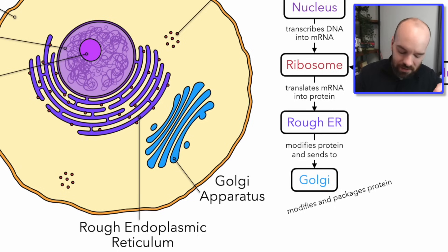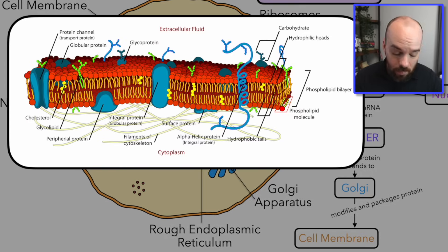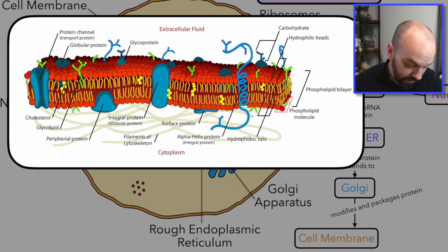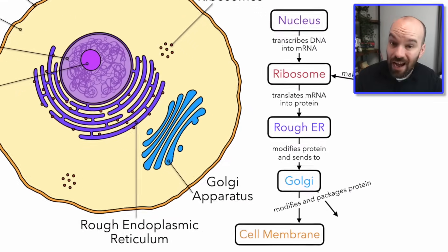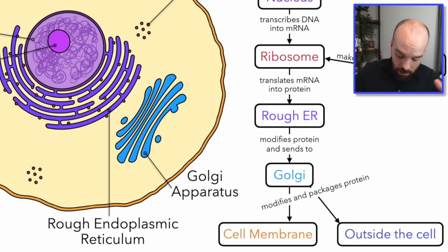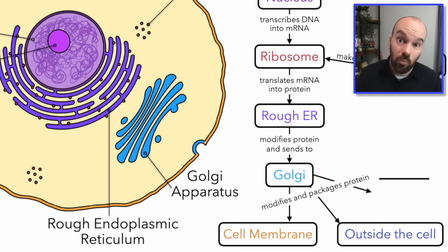The Golgi is going to modify and package that protein to send it out to wherever it needs to go — it's kind of the FedEx or the UPS of the cell. It can be sent to the cell membrane, because we have all these membrane proteins like channel proteins that allow certain molecules to pass in and out. Another place the Golgi could send a protein is outside of the cell. The vesicle is going to travel to the membrane and fuse with it through the process of exocytosis, sending those proteins outside of the cell. Or it could send them to some other organelle within the cell.